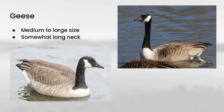And then geese are more medium to large in size, and compared to ducks, they have a somewhat long neck. And we haven't talked about this species yet in the series, but you probably know this is a Canada goose, with the brown body and the black neck and head with this white in the cheek that wraps under the chin. And it's Canada goose, not Canadian goose. But this is probably the most common goose you will see, and it's a good one to keep in mind for the general structure.